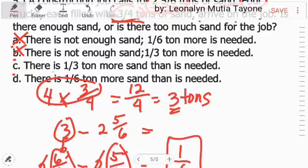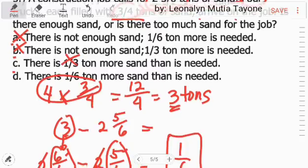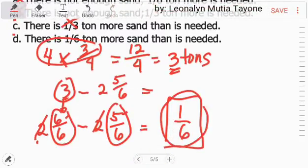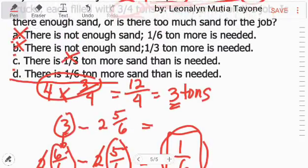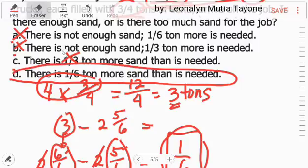Dito tayo sa letter C. There is one-third ton more sand than is needed. Mali din kasi hindi one-third. Kundi, sobra tayo ng 1/6. So, ang sagot dito ay letter D. Yung 1/6. There is 1/6 ton more sand than is needed.